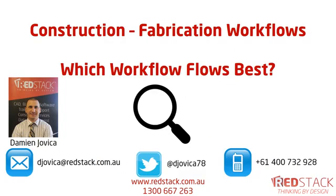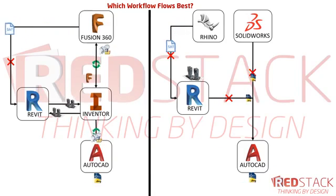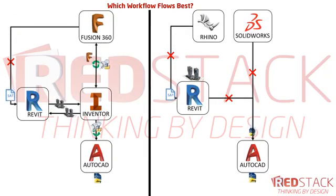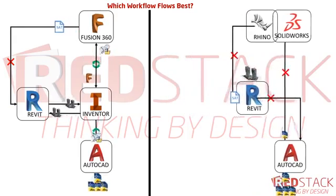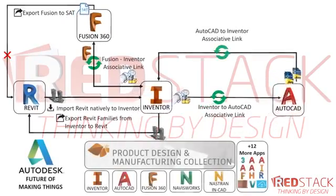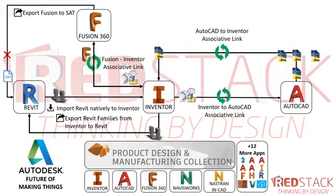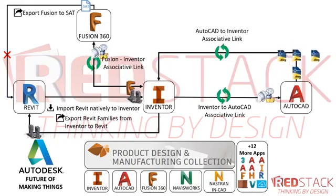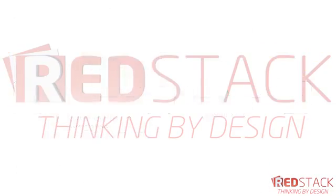So let's have a look at which workflow flows best side by side. On the left, you've got a connected workflow between Revit and the Product Design and Manufacturing Collection. On the right, you've got a disconnected workflow using SOLIDWORKS, Rhino, AutoCAD, and Revit. You've got Revit and Inventor talking to each other, Fusion and Inventor talking to each other, and Inventor and AutoCAD talking to each other. That's just a small look at the Product Design and Manufacturing Collection — there's a lot more to it. Thank you for watching.